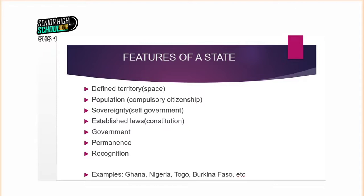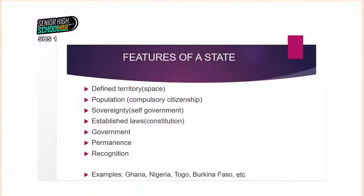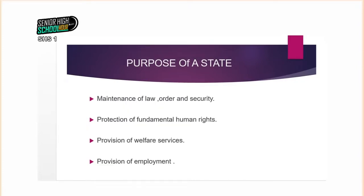A state must also have a governing body over it that makes it more viable, and it must enjoy permanence and recognition. Examples of states include Ghana, Nigeria, Togo, and Burkina Faso — please write more of these as you can at home. There are a lot of states in the world.